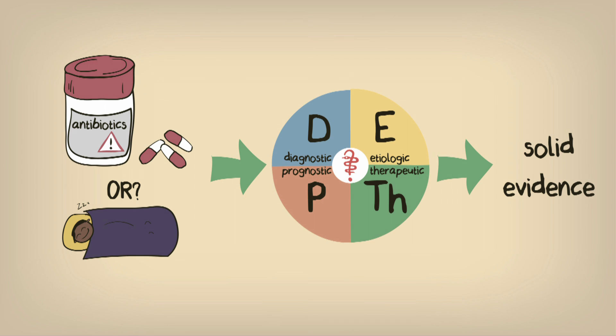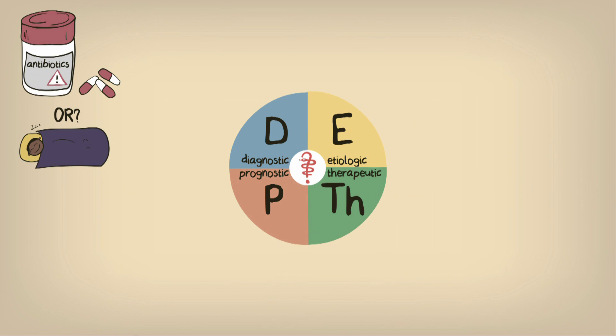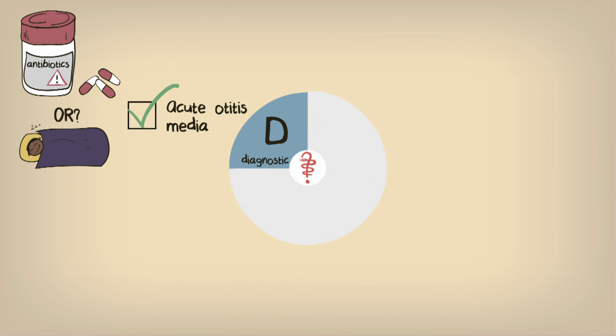The first branch we should consider is diagnosis. While the accurate diagnosis of acute otitis media is important for proper patient management, the signs and symptoms are well established, and it's usually straightforward. Our problems lie elsewhere in the model.